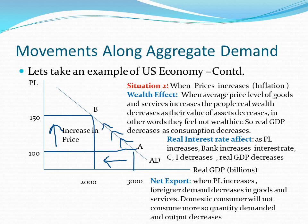Now moving to the next slide, which is a continuation of the previous one. This is the reverse situation. Here you can see when the price level increases from 100 to 150, the overall GDP decreases from 3000 to 2000. This is due to three situations, because this is a scenario where the country is facing inflation or a high level of inflation.